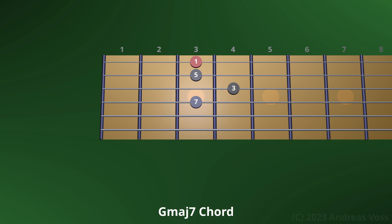Next, let's construct the major 7th chord from the dominant 7th chord. We do this by raising the 7th to the major 7th. This voicing sounds a bit weird, but we will learn beautiful sounding voicings when we go up the neck.